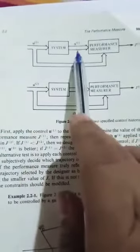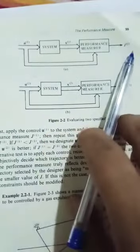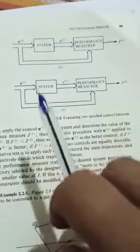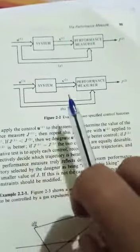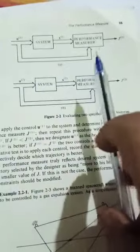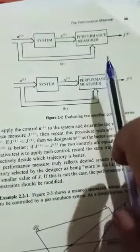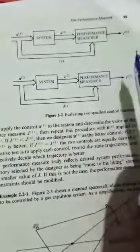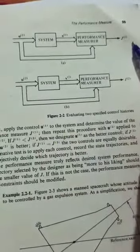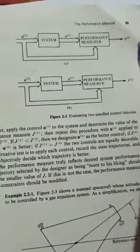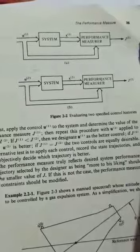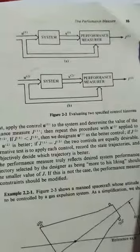So the selection of the performance measure uses two terms: admissible controls u and state trajectories x. We take the first input, second input, third input, and so on, comparing them one by one. Whichever input gives the minimum performance measure, we select that input. This is the concept of selecting a performance measure.